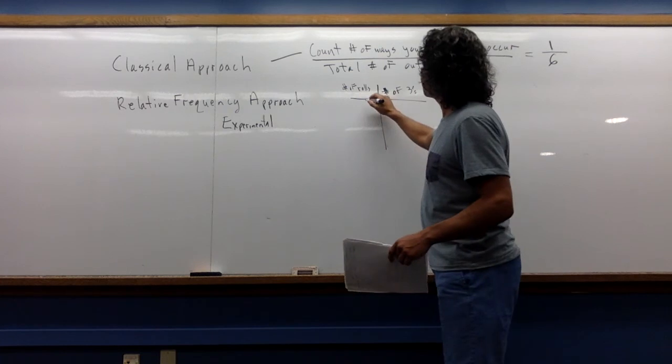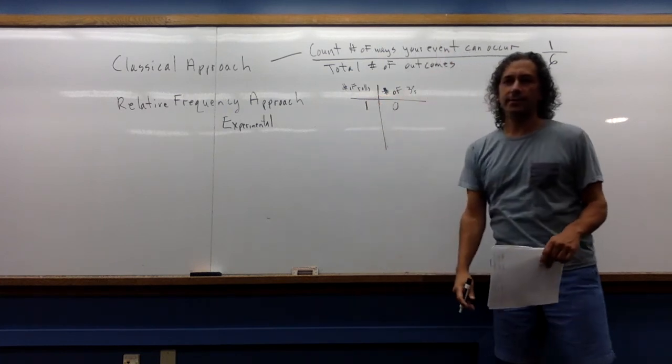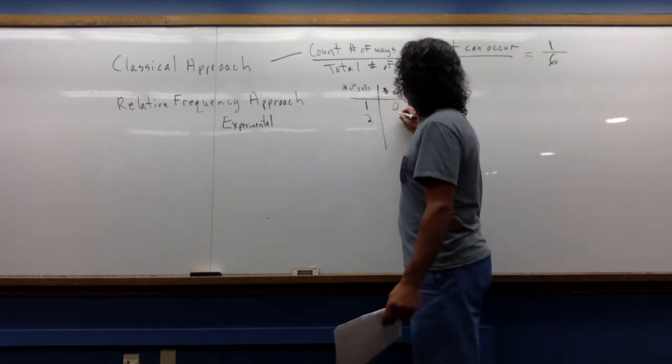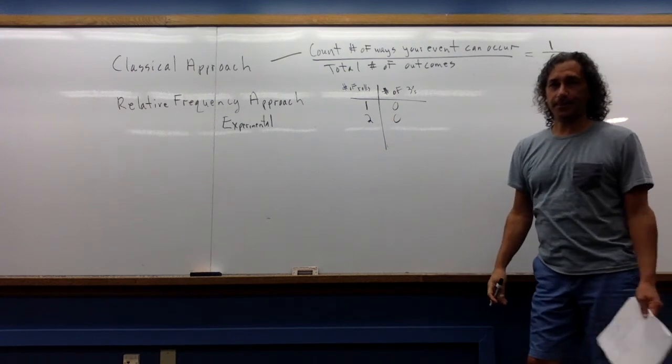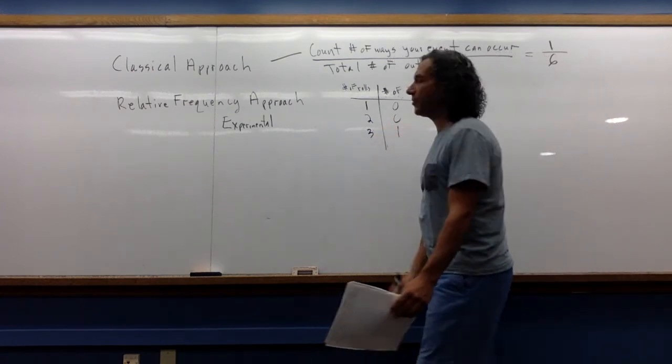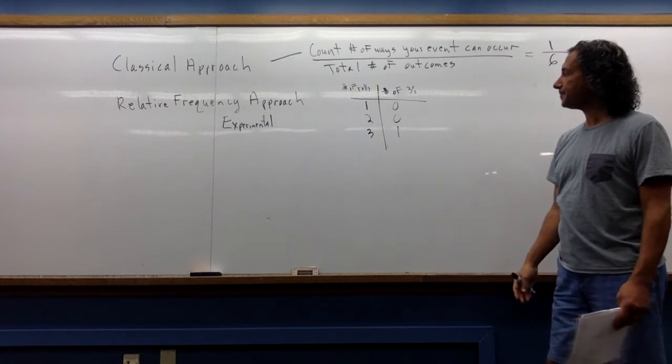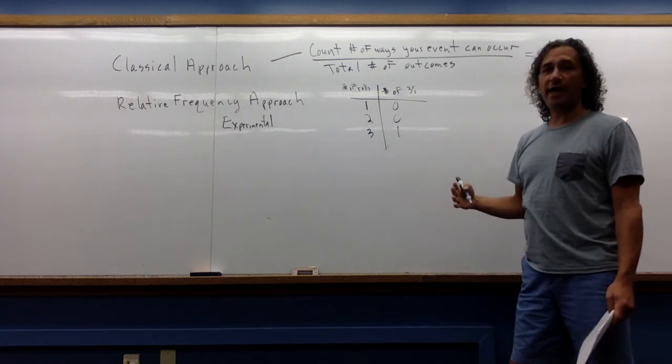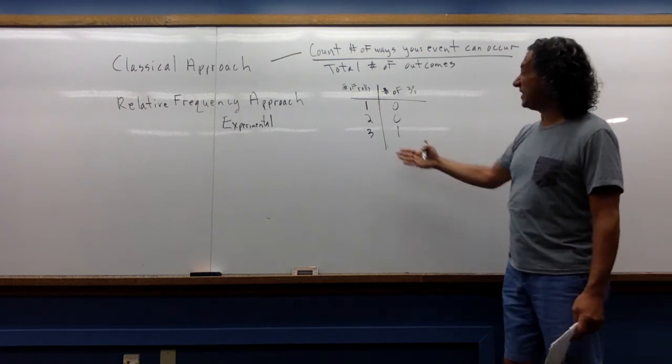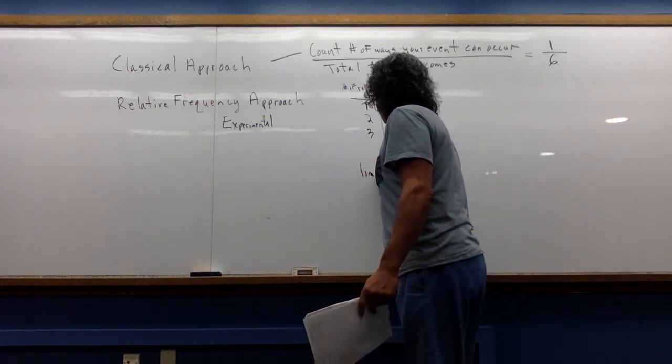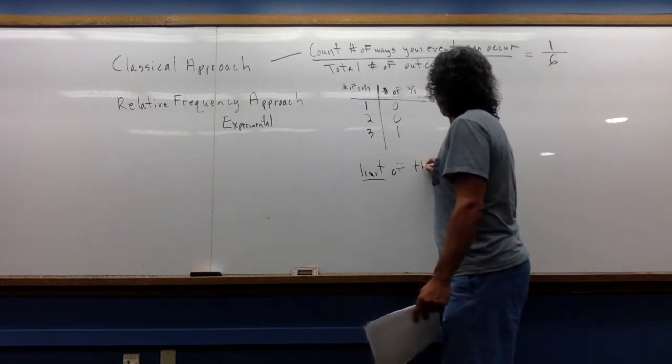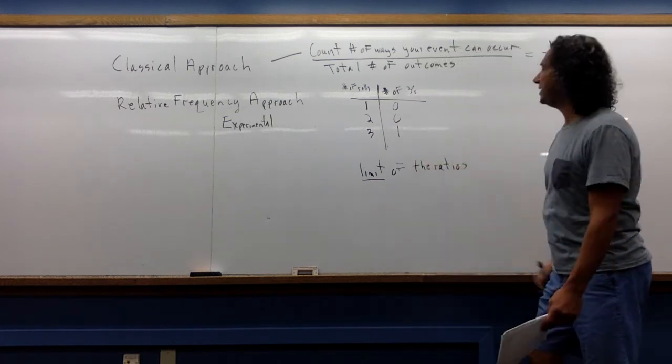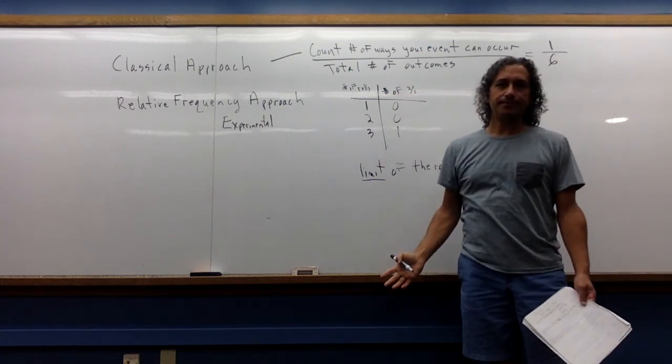I keep rolling the die, and let's say I'm going to count the number of 3s. So I roll it once, and maybe I don't get a 3. So this ratio is 0 divided by 1. But I'm going to do it again. Maybe I still don't get a 3. I do it again. Well, maybe this time I did get a 3. So now my ratio is 1 out of 3. So in this approach, what we're going to do is we're going to define the probability of an event occurring as being the limit of the ratios as I keep doing this forever and ever.